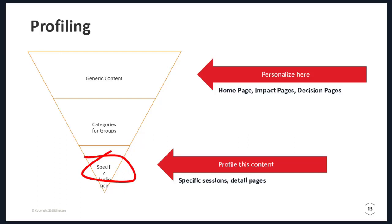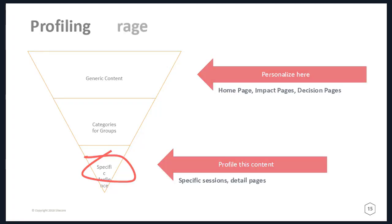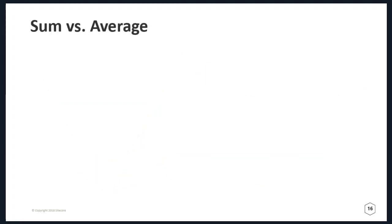A lot of questions we get are about when to use sum, average, or percentage. When a user visits your site and consumes content, we add the profiles associated with that content and save them to the user. When matching to pattern cards, if we use sum we apply that for matching; if we use average we apply that instead. This also gives you some opportunity to change behavior over time.